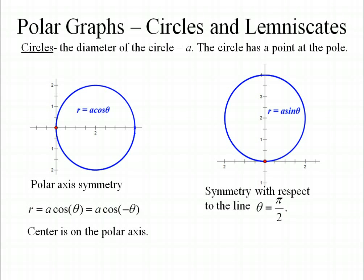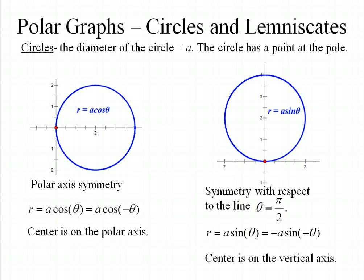With the sine graph, you're going to have symmetry with respect to the line theta equal pi over 2. That test is to replace the sine and the angle with their negatives. Negative a sine negative theta is going to simplify to a sine theta. Since we have symmetry with respect to the vertical axis, the center of the circle must lie on the vertical axis.